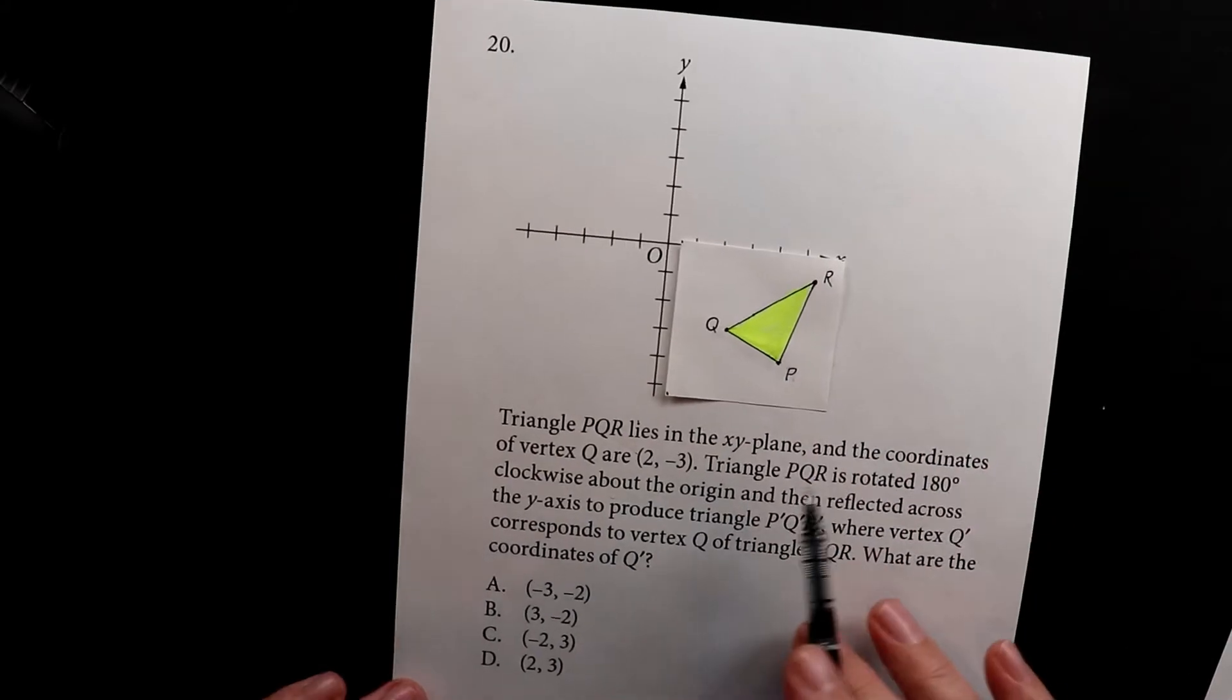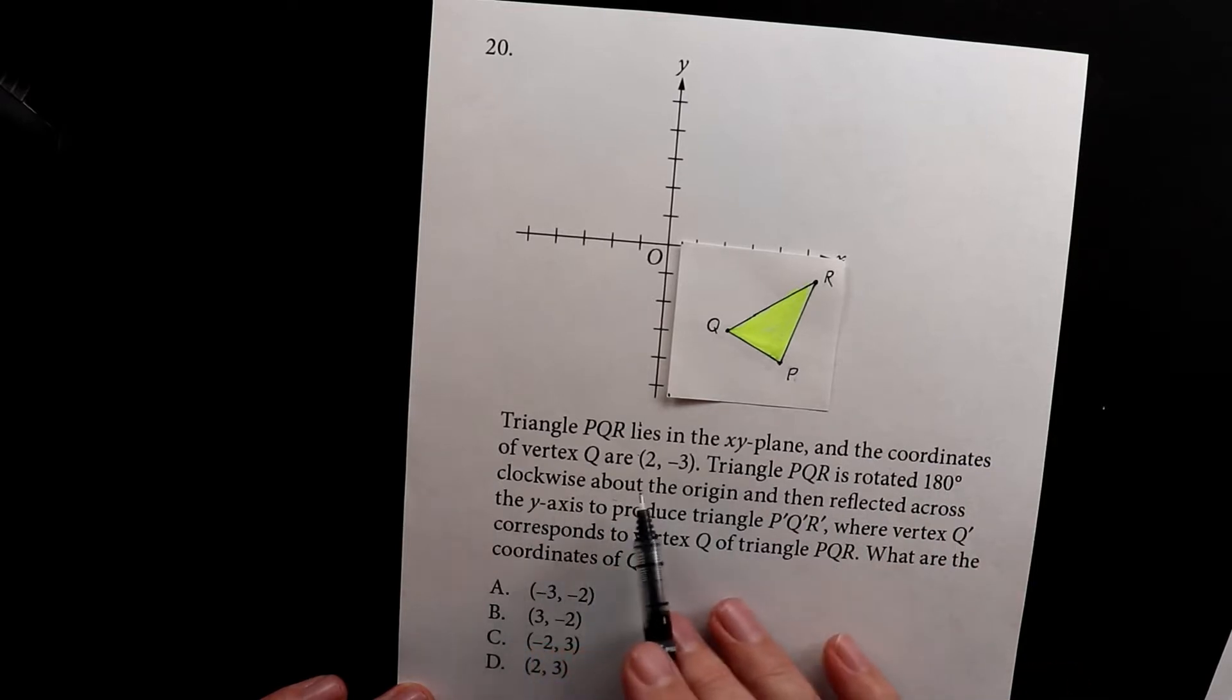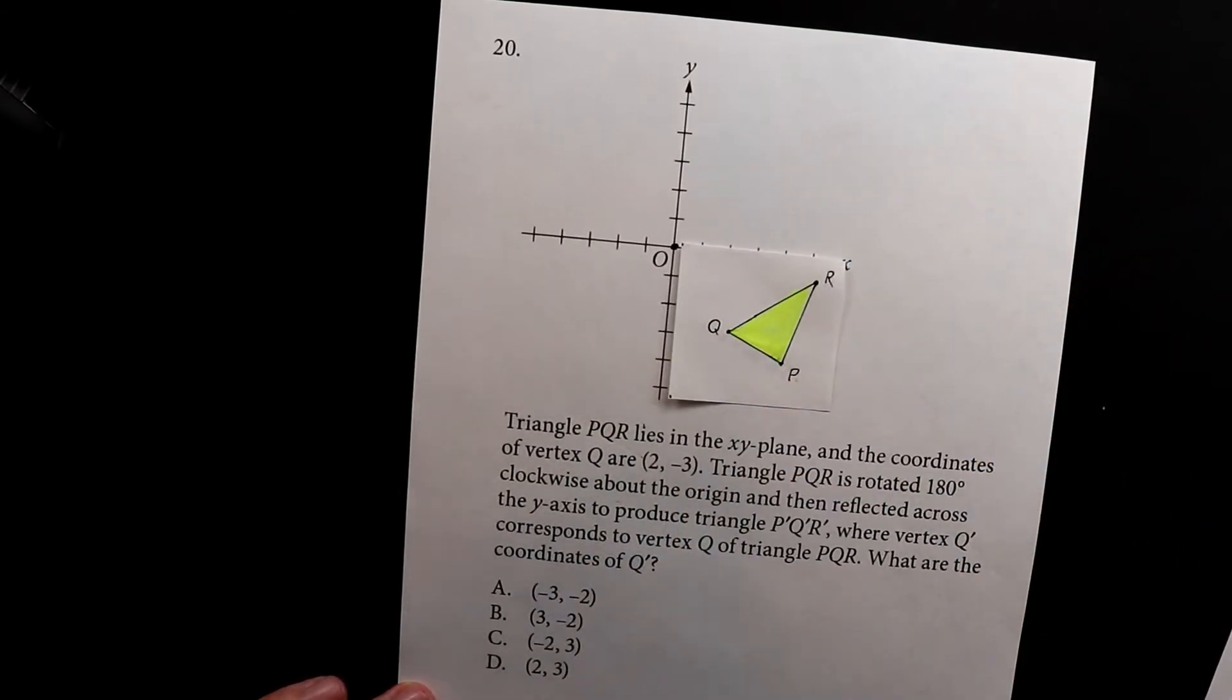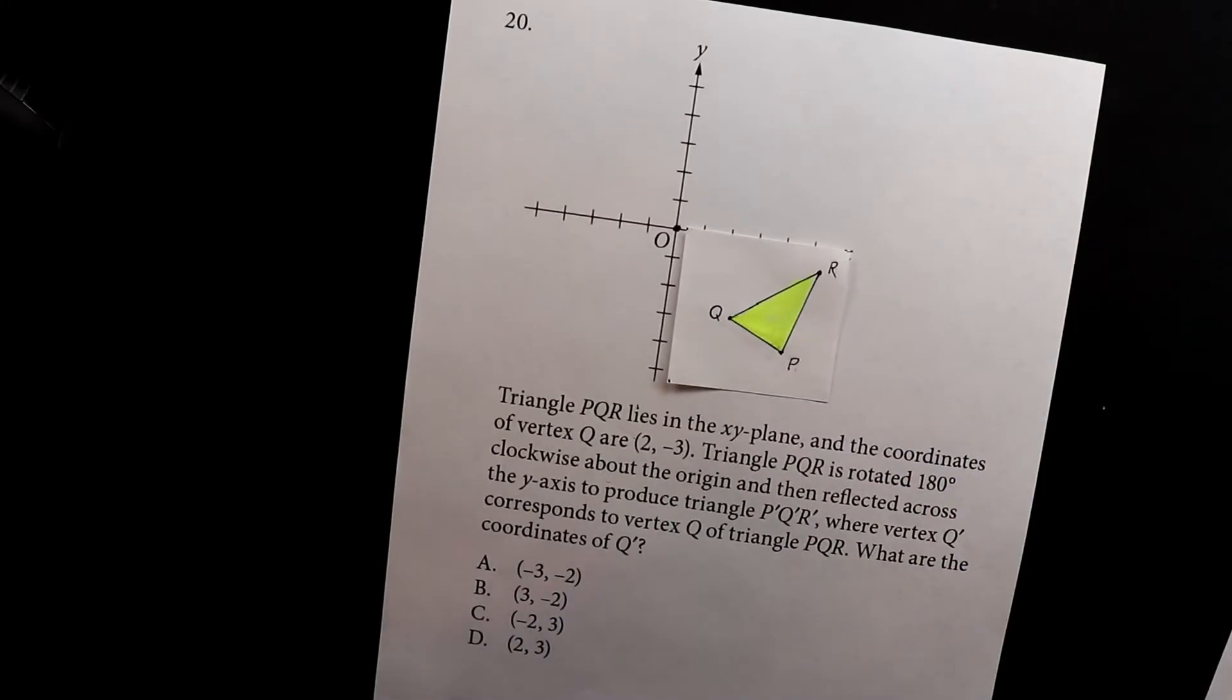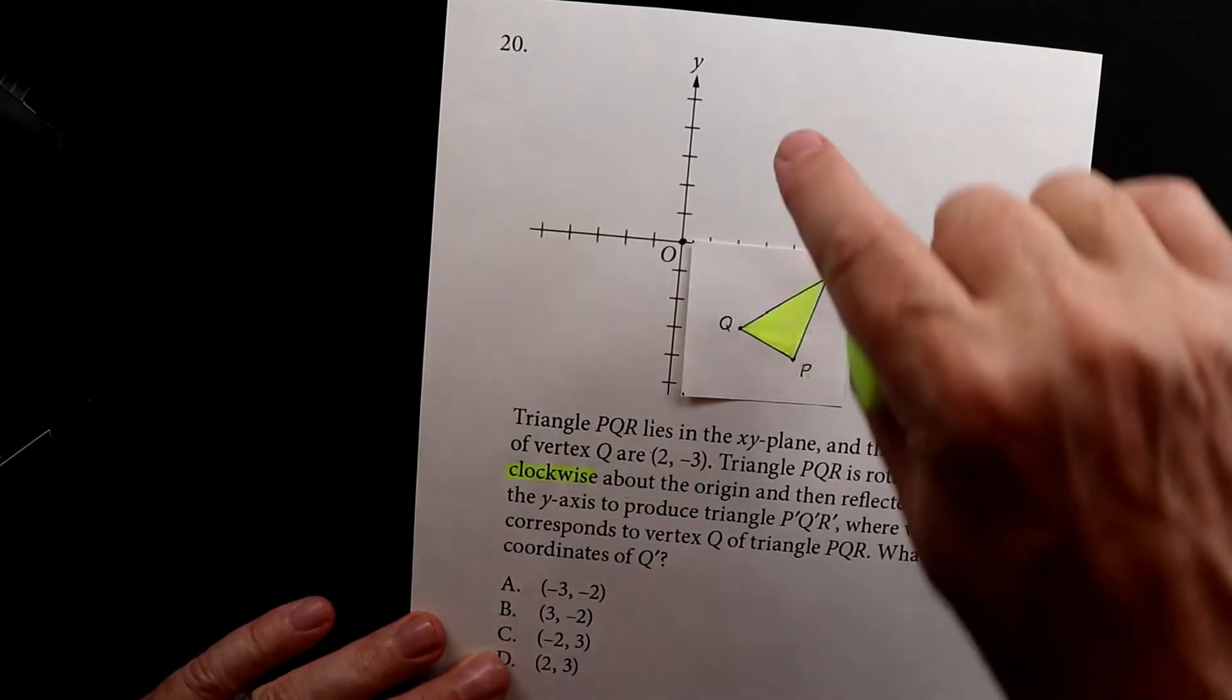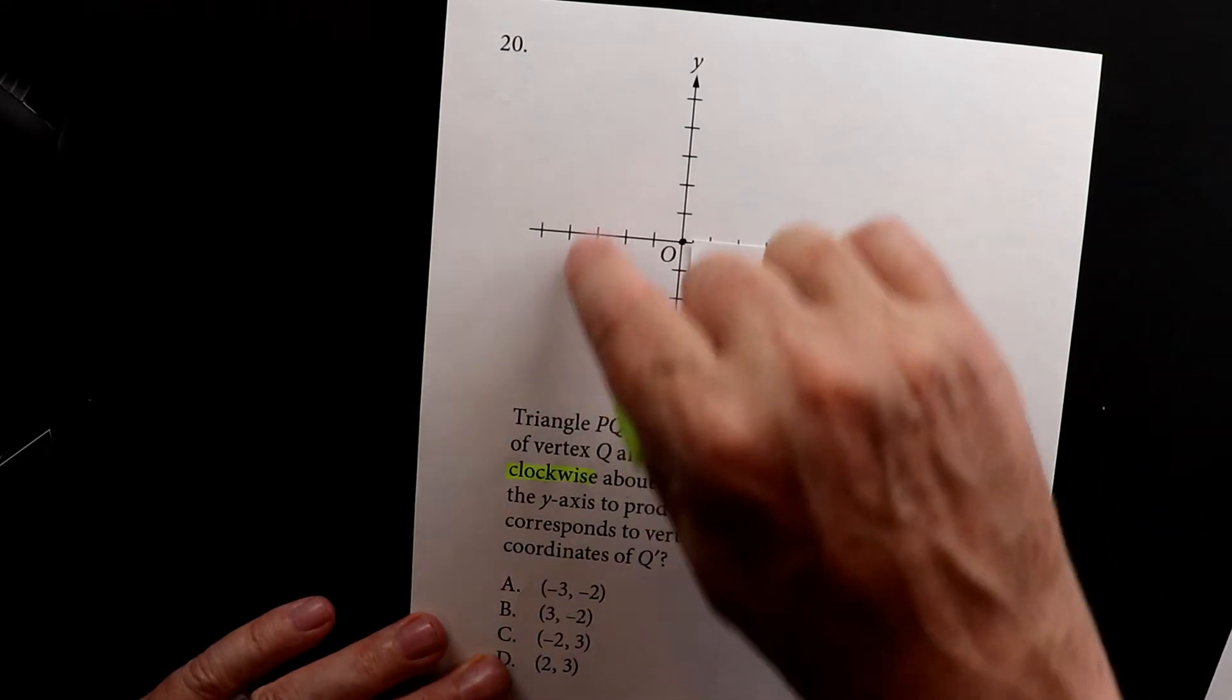Now the triangle PQR is rotated 180 degrees clockwise about the origin. So the origin is right here. That's the center of the coordinate plane. And so what they're doing is they're saying that you're rotating it. Now here's the one, this is where people make mistakes on this. They're saying clockwise. A clock goes in this direction. The hands of a clock go in this direction. This is clockwise.